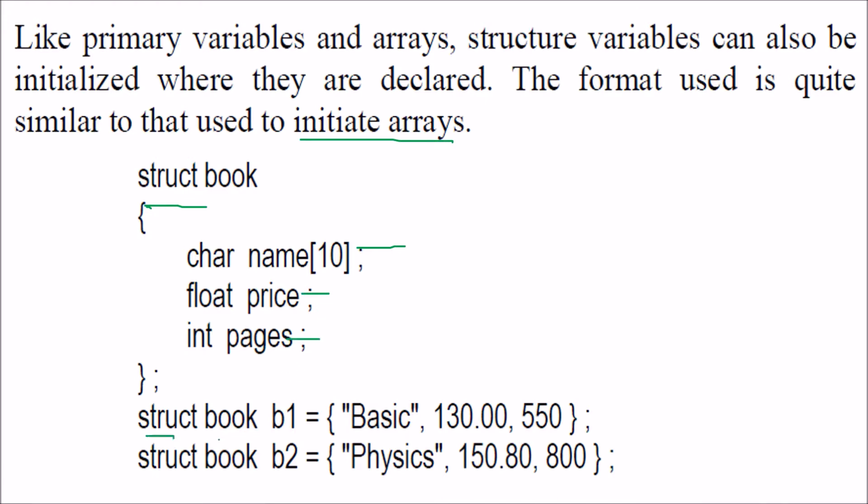How to initialize? We have struct book b1, struct book b2, and we have initialized the name as basic, price as 130.00, pages as 550, and likewise for b2 also.